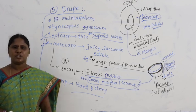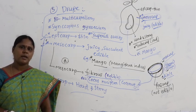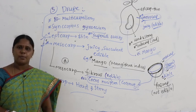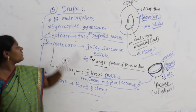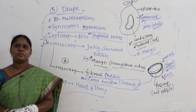We have completed all five types of fleshy fruits. They are: berry, pome, pepo, hesperidium, and drupe.